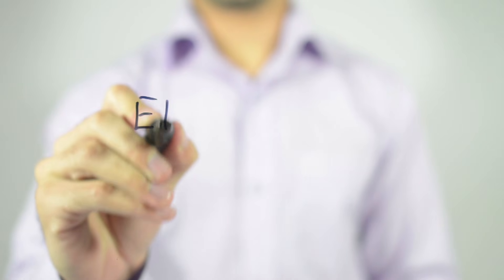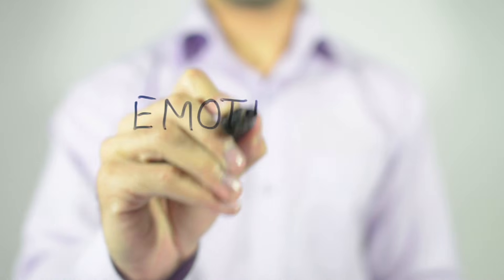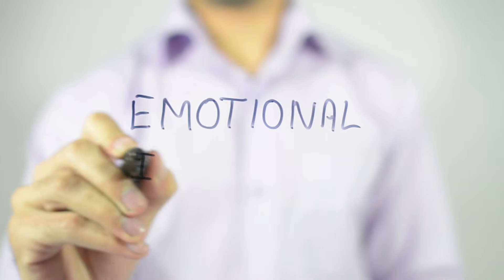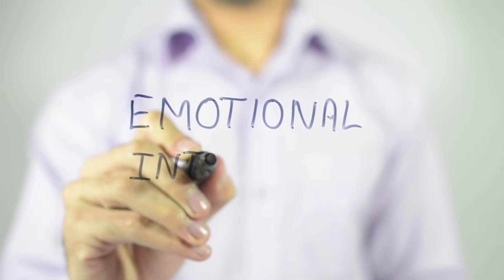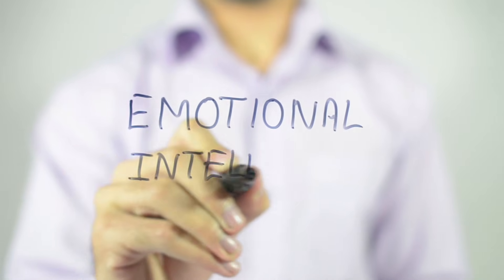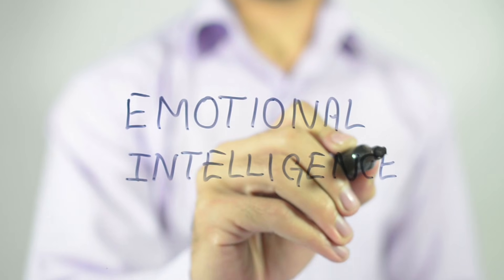This theory later became known as the triarchic theory. I also want to highlight emotional intelligence, proposed by Edward Thorndike and defined by Peter Salovey and John Mayer. This intelligence is made up of our ability to perceive emotions, understand emotions, manage our own emotions, and use emotions when trying to critically think.